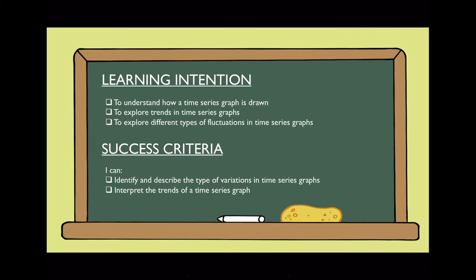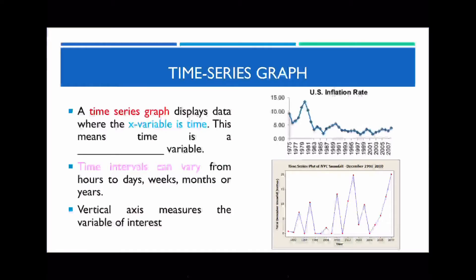A time series graph is very similar to a scatter plot, but what is on the x-axis is always going to be time. Because time is always going to be found along the x-axis, this is therefore considered to be an explanatory variable. Along the x-axis I've labeled the years, but sometimes depending on the question, the time intervals can vary — it could change to hours, days, or weeks.